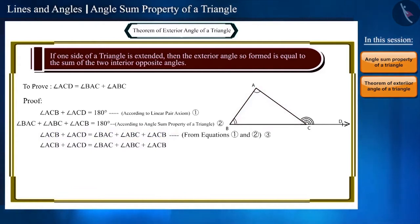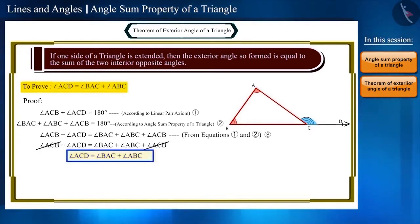Angle ACB is on both sides of this equation. We can cut it from both sides and write like this: angle ACD equals angle BAC plus angle ABC. And this is what we have to prove. So friends, the second theorem also ends here.